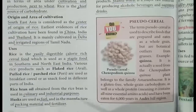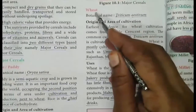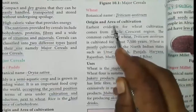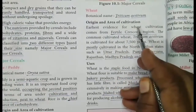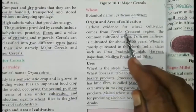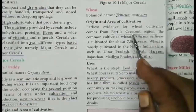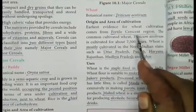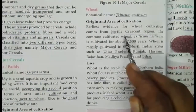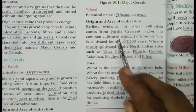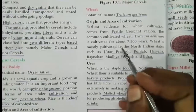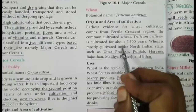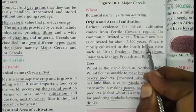The next major cereal is wheat. Its botanical name is Triticum aestivum. We got evidence for wheat cultivation in early days from the Fertile Crescent region, which is the area between the Tigris and Euphrates rivers. The common wheat Triticum aestivum has been cultivated for about 7,500 years.